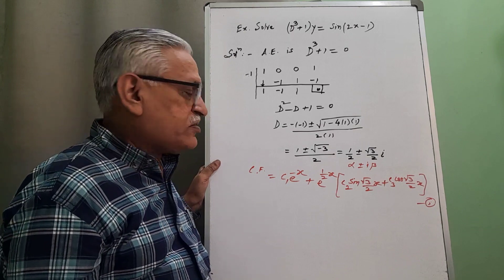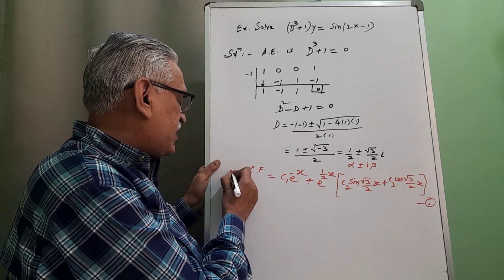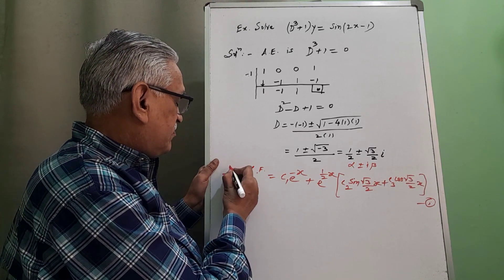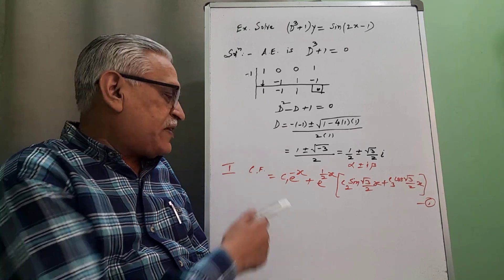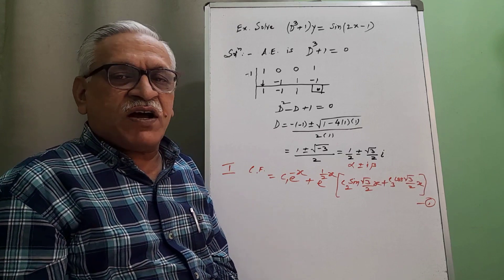If problem is asked for 4 marks, the scheme of marking for this step is 1 mark. If you get this step as correct, then you will get 1 mark for that.